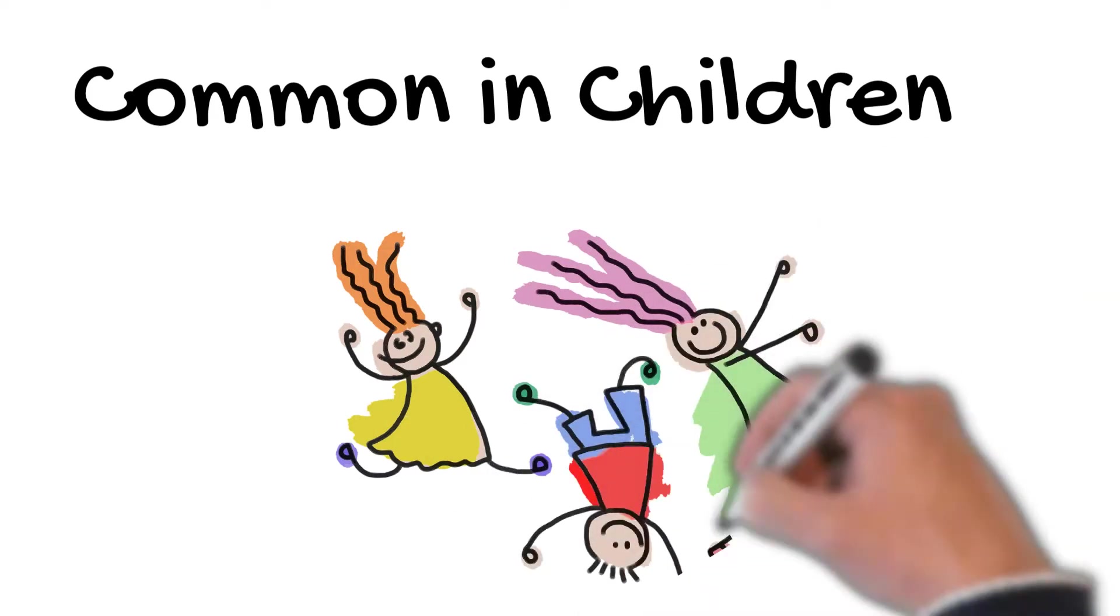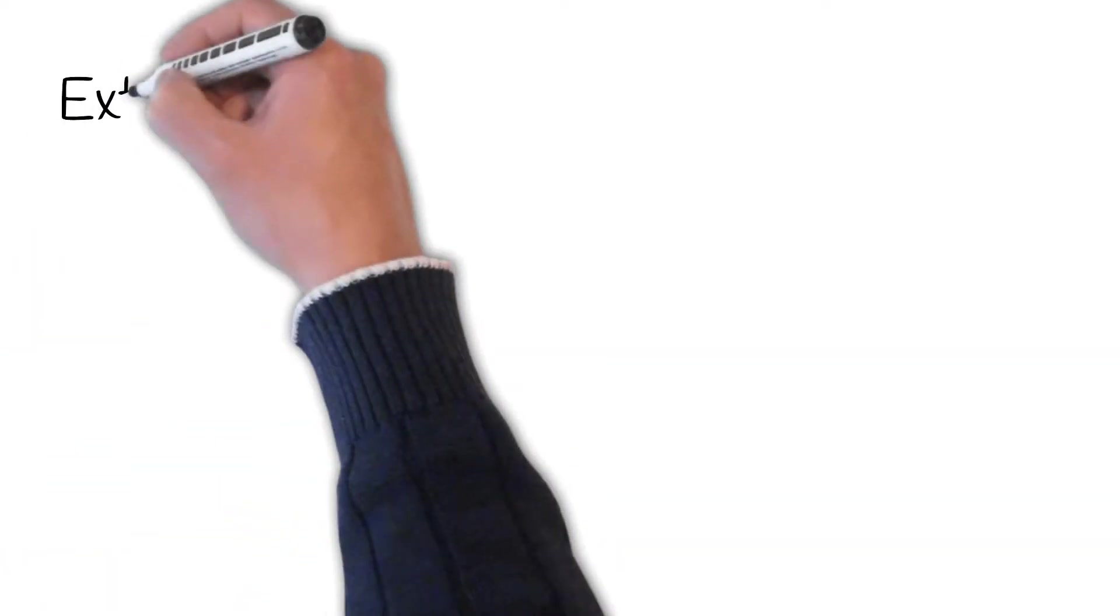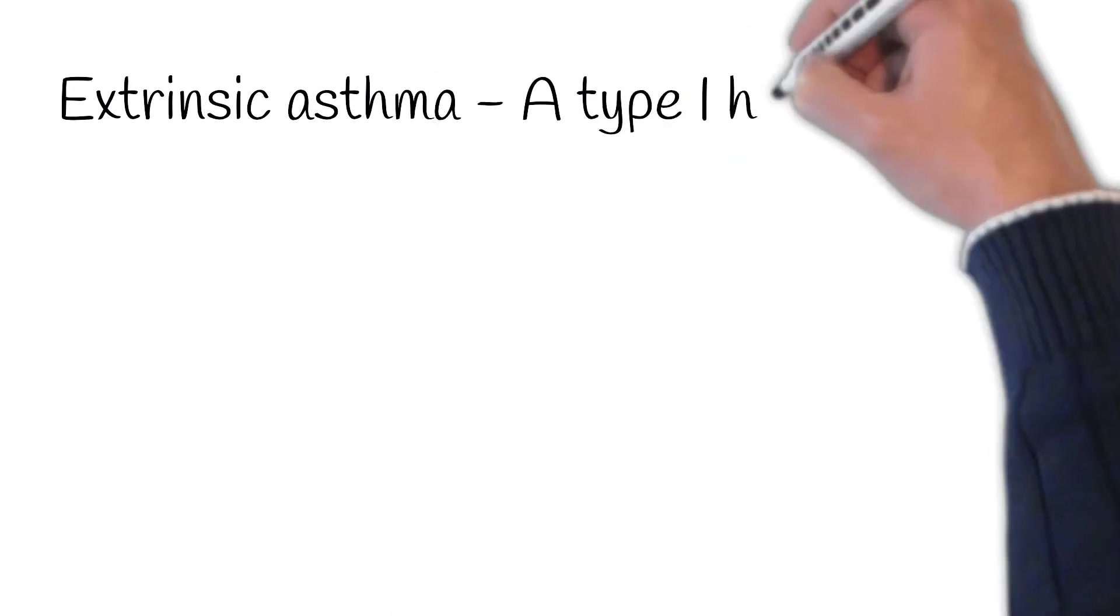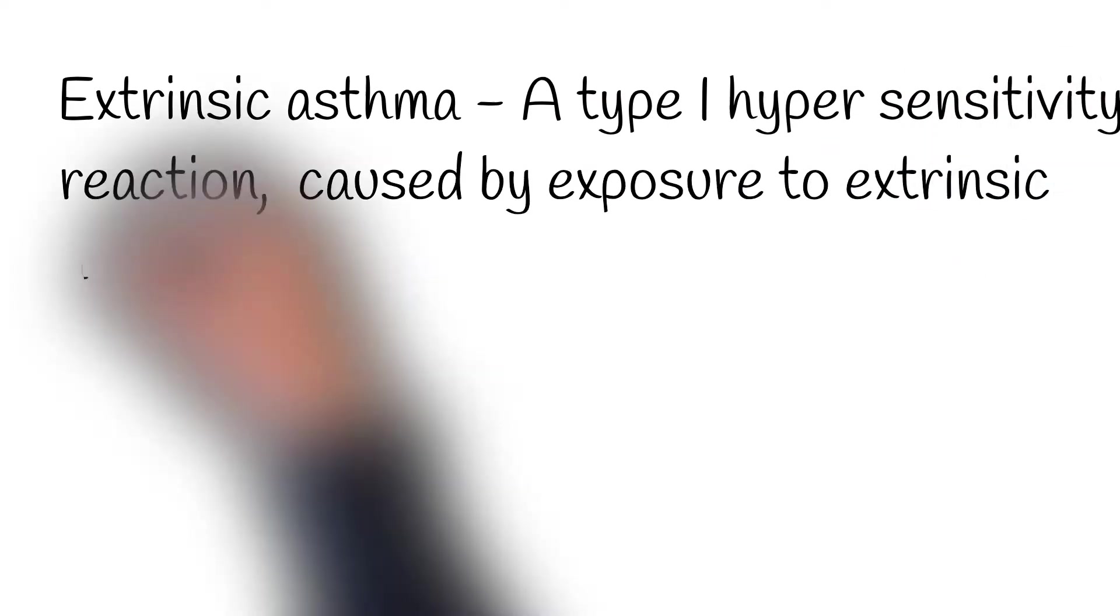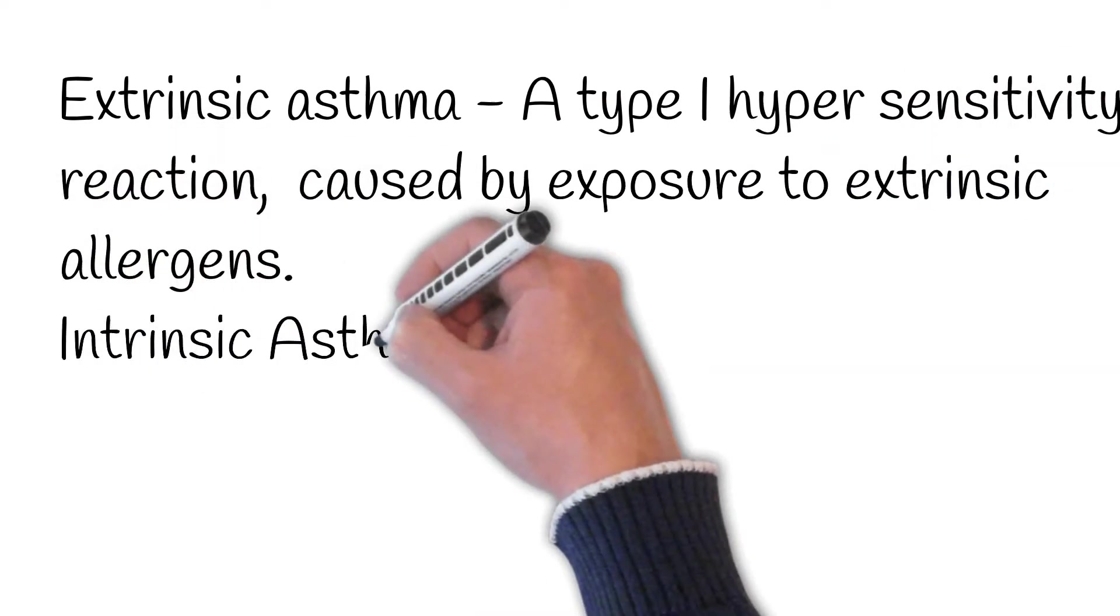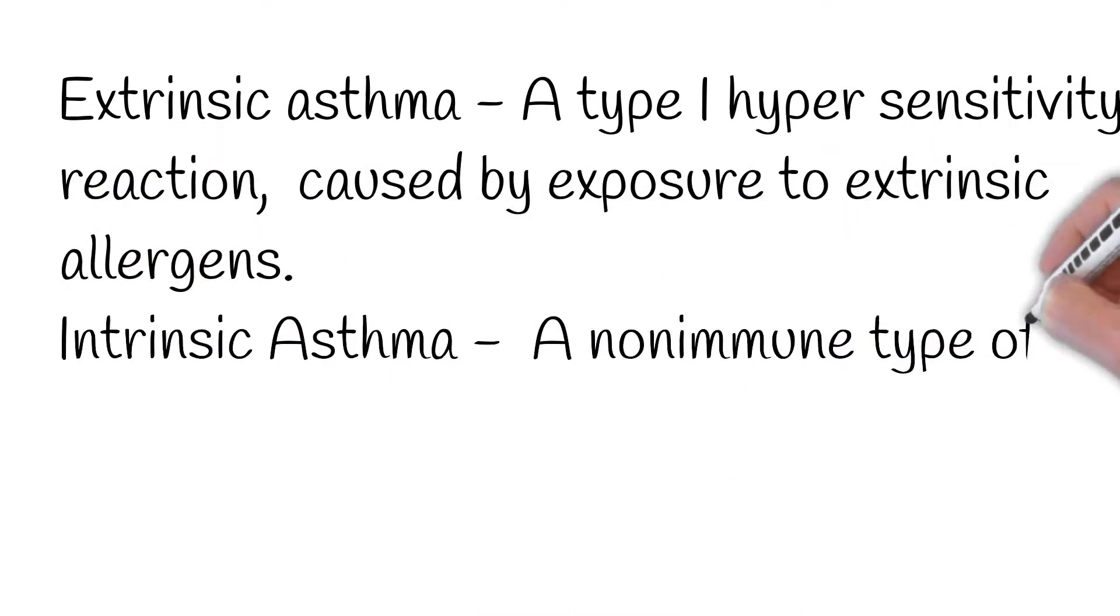Two types of asthma exist: extrinsic and intrinsic types of asthma. Extrinsic asthma, a type I hypersensitivity reaction, is caused by exposure to extrinsic allergens. Intrinsic asthma, a non-immune type of asthma that is not associated with allergens.